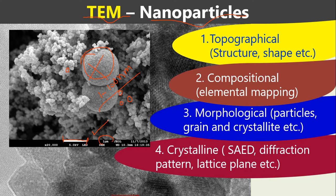We are now going to explain the TEM analysis of these nanoparticles. A transmission electron microscope requires a very thin sample. It gives information about topography — how the structure looks, whether it is a particle, rod, or fiber — and also compositional analysis. This is a very advanced technique. Elemental mapping will not be covered in this video.